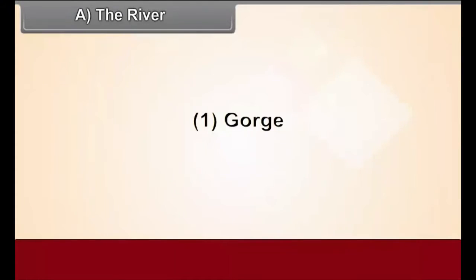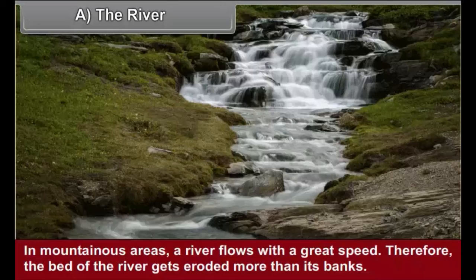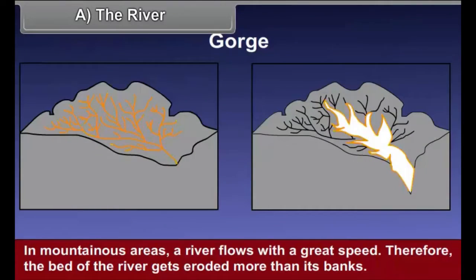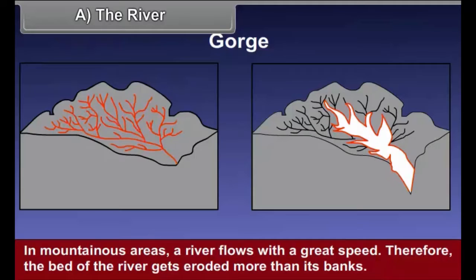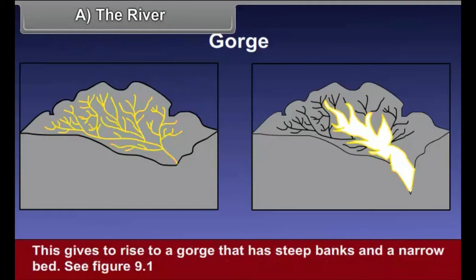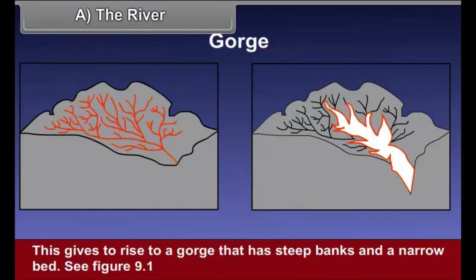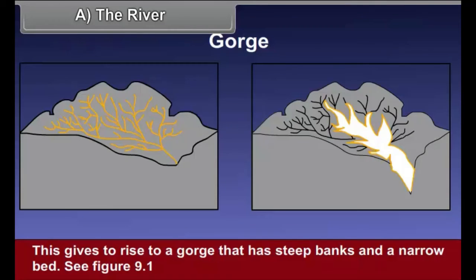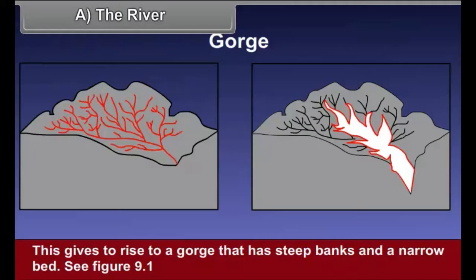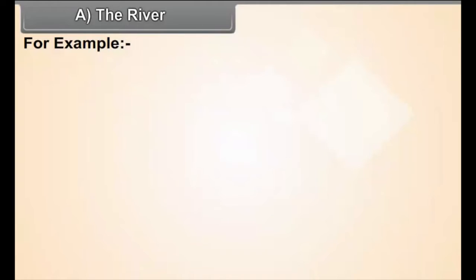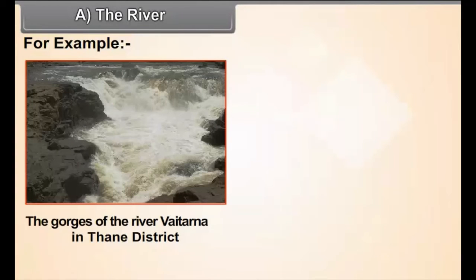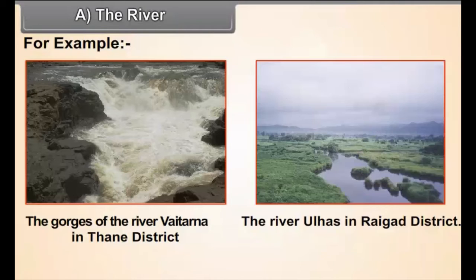Gorge: In mountainous areas, a river flows with great speed. Therefore, the bed of the river gets eroded more than its banks. This gives rise to a gorge that has steep banks and a narrow bed. See figure 9.1. For example, the gorges of the river Vaitarna in Thane district and the river Ulhas in Raigad district.